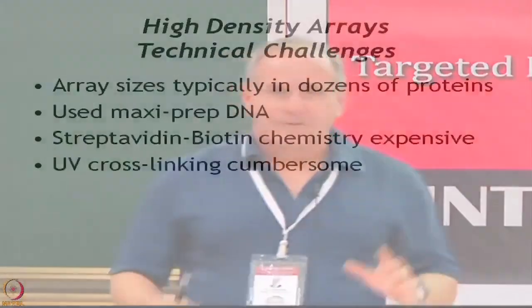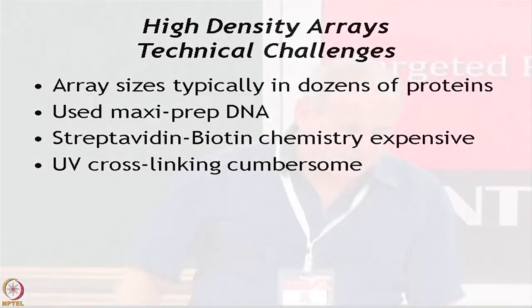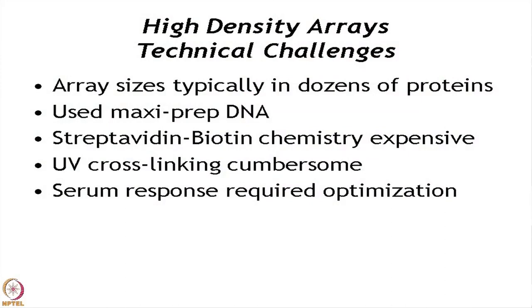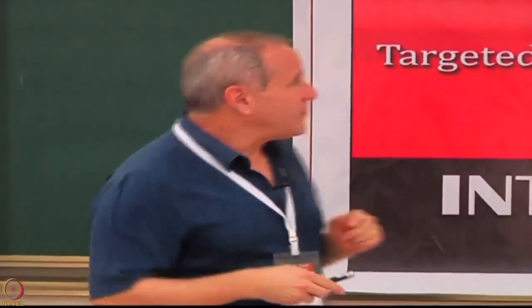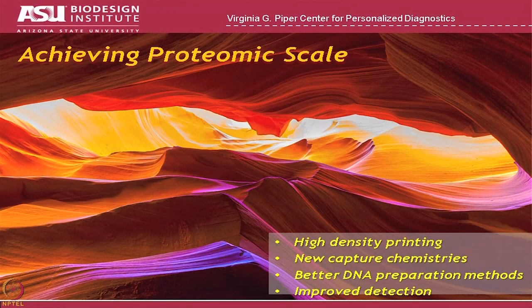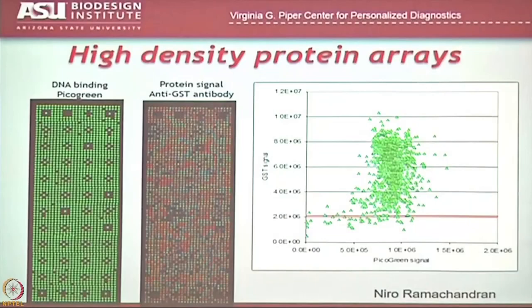We needed to do some optimization and increase our content. I'm going to fast forward a bit — I'm not going to go through all the optimization experiments — you're going to learn how to make these arrays using our current approach. But we spent a lot of time working on high-density printing, developing a better capture chemistry, figuring out how to make DNA in high throughput, and figuring out how to detect interactions in a more ready and easy way. This is sort of the result of all that work. What you're looking at is our current version of what we do most of the time for NAPPA now.